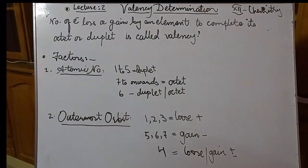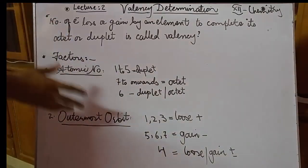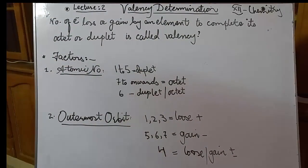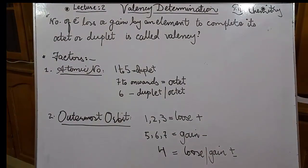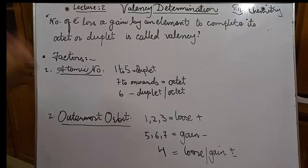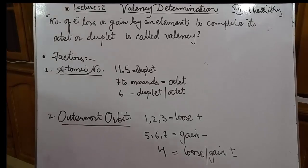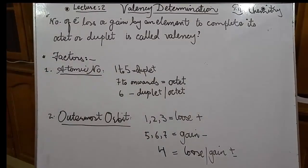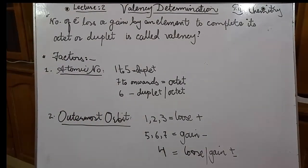To determine valency, we first have to consider two factors. Number one is atomic number. For atoms with atomic number from one to five, they complete the duplet. For elements whose atomic number ranges from seven onwards, they complete the octet. And there is the atom which has six electrons — that is carbon — which can complete either its duplet or octet. You have to learn these three points.